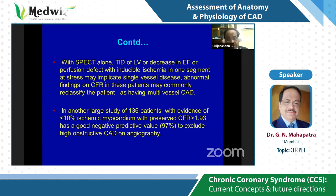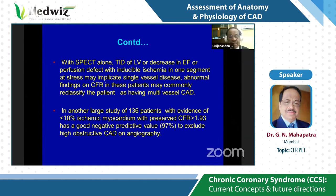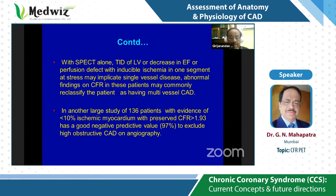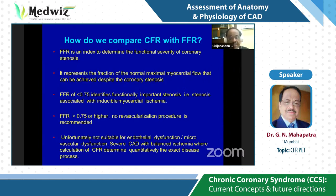Abnormal CFR findings in patients with a perfusion defect suggesting single-vessel disease on SPECT may commonly reclassify the patient as having multi-vessel CAD compared to SPECT data alone. In a large study of 136 patients with less than 10% ischemic myocardium, preserved CFR more than 1.93 had a good negative predictive value of 97% to exclude high obstructive CAD on angiography.